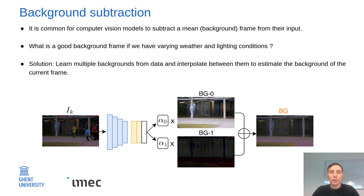Of course, if we have different weather conditions or different lighting conditions, it's not really clear what a good background frame would look like. So instead, we propose to learn multiple background frames from data, completely unsupervised, and interpolate between them to accurately estimate the background of a current frame.